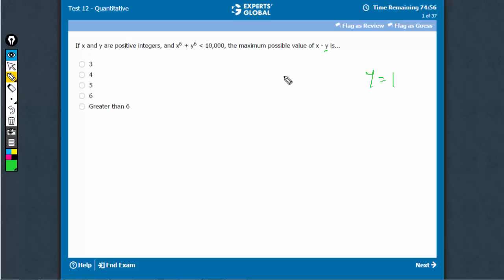So y can be taken as 1. If y is 1, basically we have to find that for what maximum value of x, this is less than 10,000. Plus 1, this has to be less than 10,000.